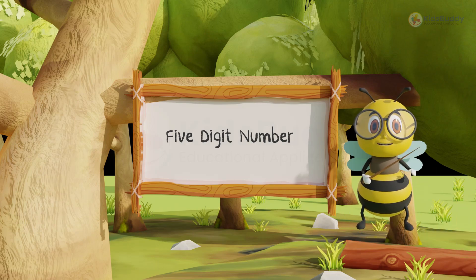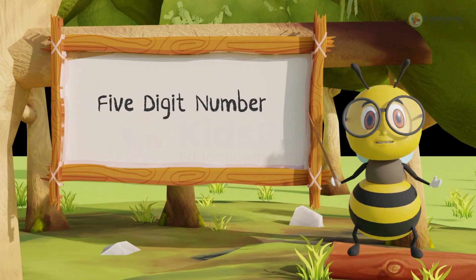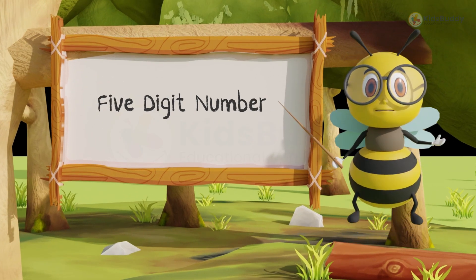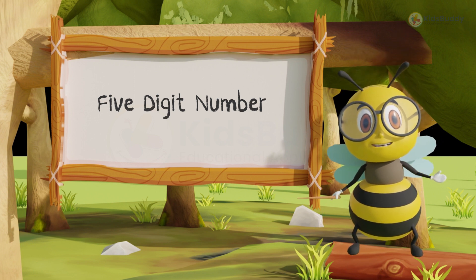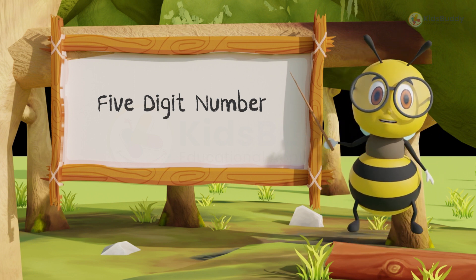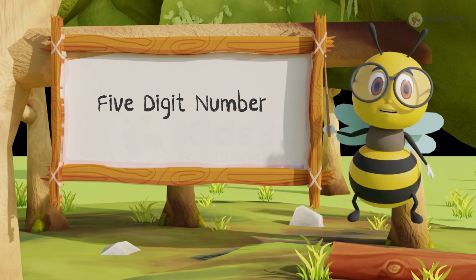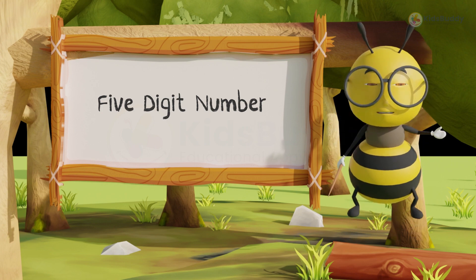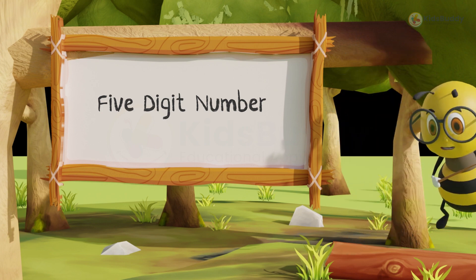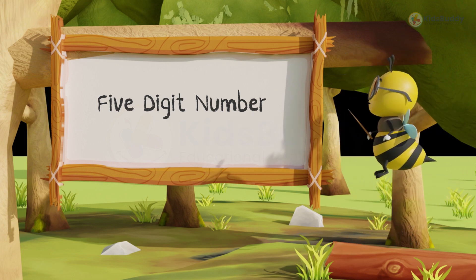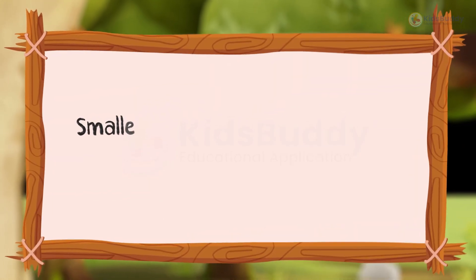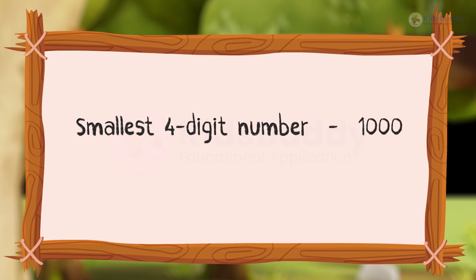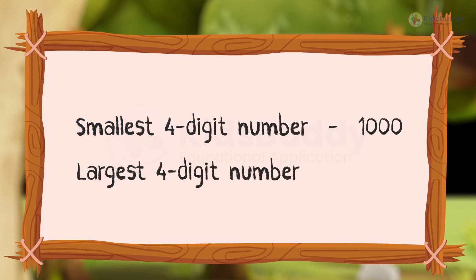Hello kids! Let us learn today about 5-digit numbers. Before we start about 5-digit numbers, tell me the smallest and largest 4-digit numbers. The smallest 4-digit number is 1000, and the largest 4-digit number is 9999.